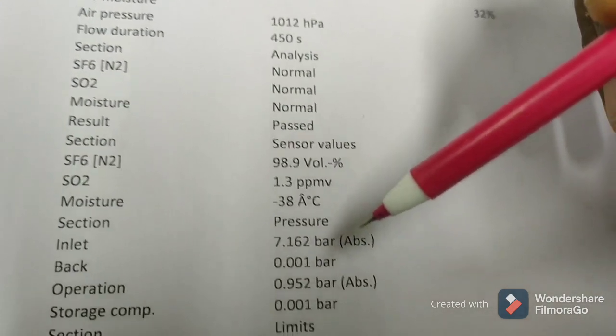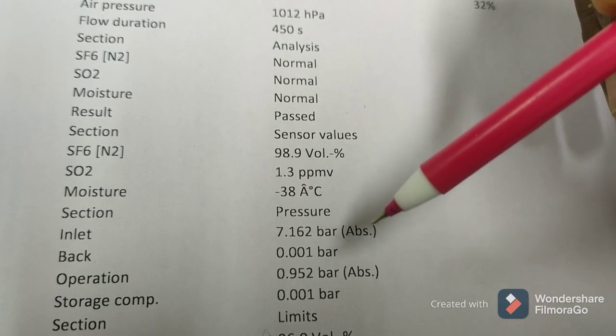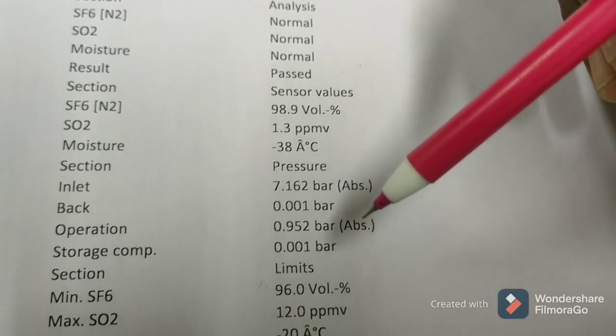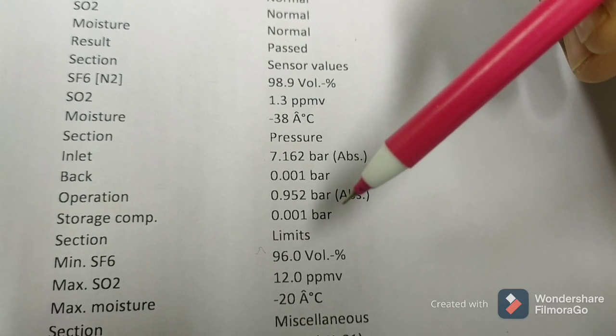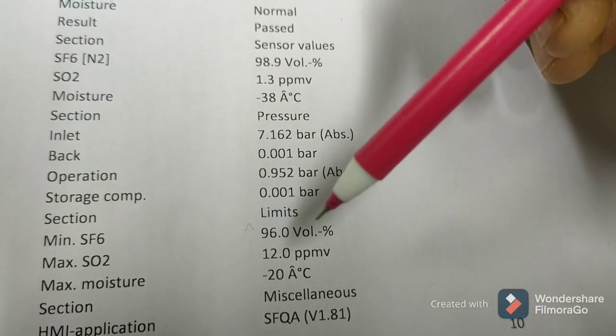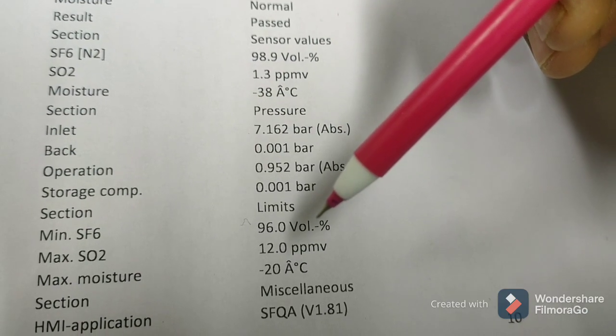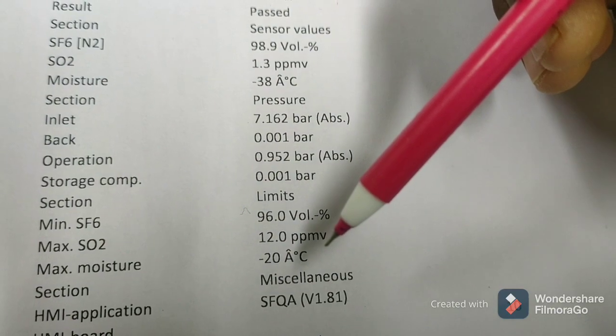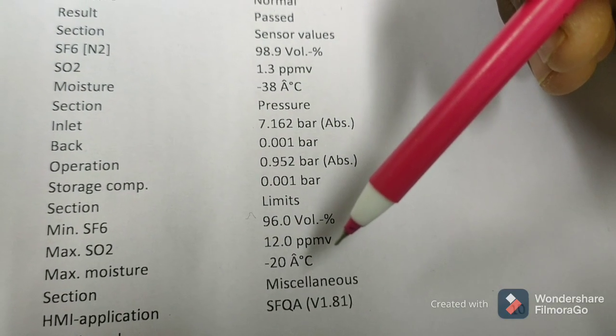The section pressure: inlet pressure 7.162 bar, operation 0.952 bar, storage component 0.001 bar. Minimum SF6 is 96% volume, maximum SO2 is 12.0 ppm, maximum moisture is -20°C.